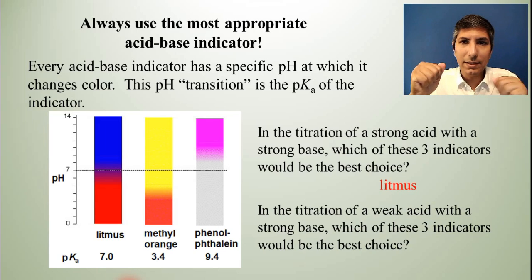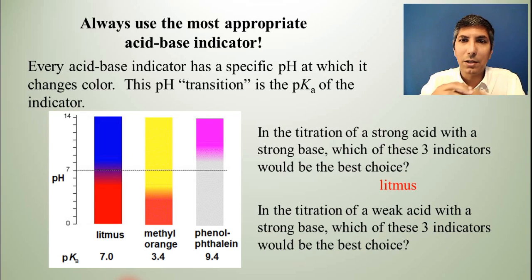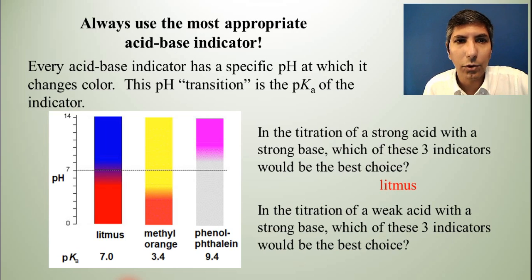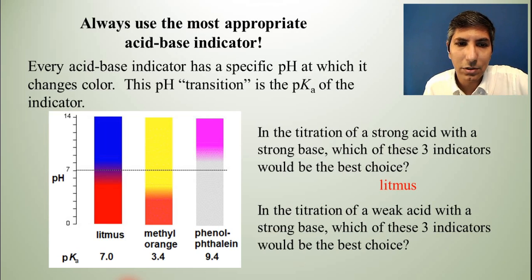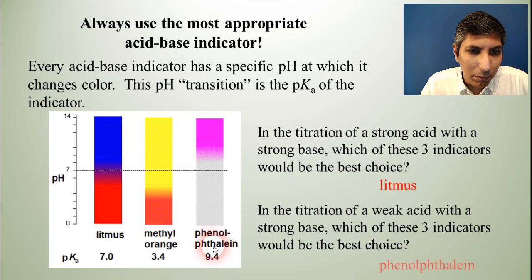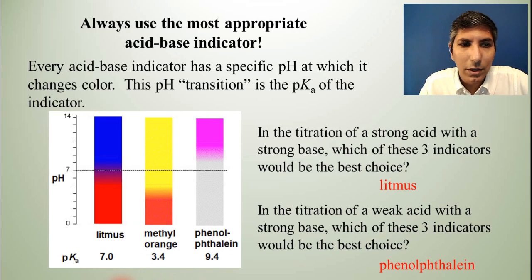What about a weak acid and a strong base — which indicator would you use then? If you have a strong base and a weak acid, the base is going to predominate and your equivalence point is going to be on the basic side, probably around pH 9. So you'll want an acid-base indicator that transitions around 9, and the best choice here is phenolphthalein.